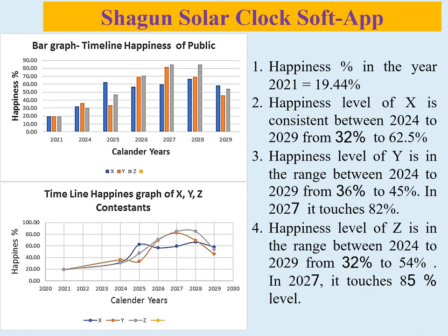Mr. Z के case में, penis level 2024 में 30.56% से आरंभ होकर, प्रधान मंत्री term 2024 से 2029 में क्रमशः घटता बढ़ता है, 2027 में 85% level छूता है और 2029 में 54% हो जाता है। तीनों candidates X, Y और Z के प्रधान मंत्री term 2024 से 2029 का timeline penis graph चित्र में दर्शाया है। यह graph जन्म समय के सूर्य की स्थिति से transit की स्थिति को penis percent में compute किया है। Out of three graphs, it is apparent that Mr. X is most deserving candidate because penis percent at the time of taking the charge of PM office in 2024 is 79% and at the end of the term it is 58.33%, which is better than other candidates.